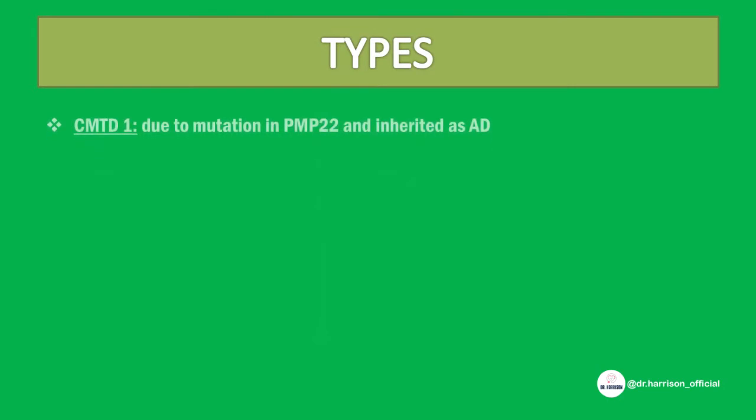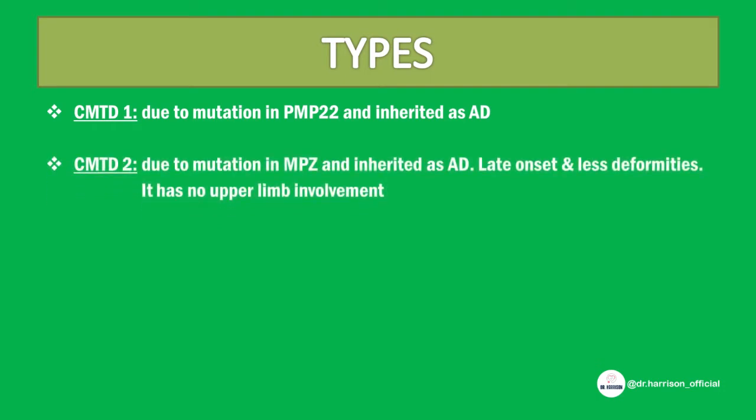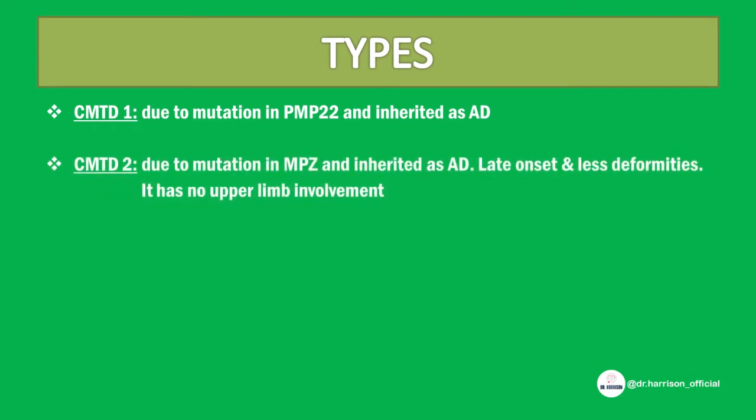It has 5 types. CMT1 is due to mutation in peripheral myelin protein 22 and is inherited as autosomal dominant. CMT2 is due to mutation in myelin protein 0 and is also inherited as autosomal dominant.